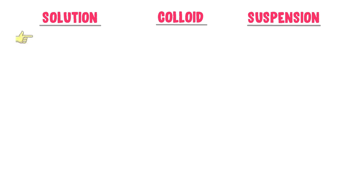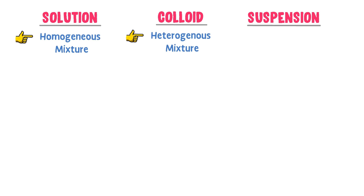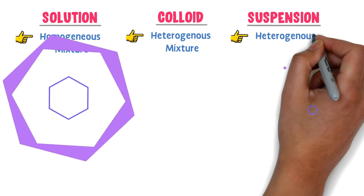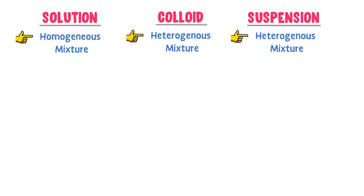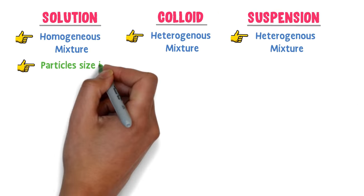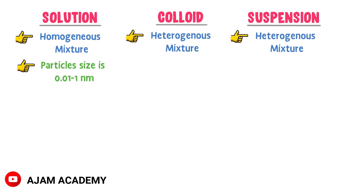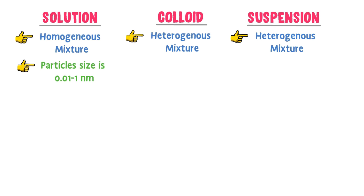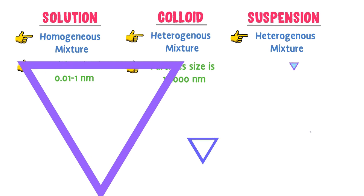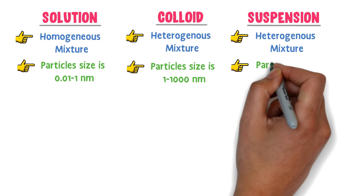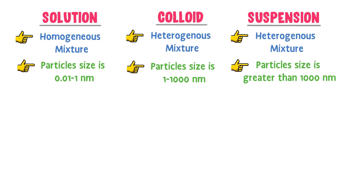A solution is a homogeneous mixture, while a colloid and suspension are heterogeneous mixtures. Regarding particle size: in a solution, particles range from 0.01 up to 1 nanometer; in a colloid, particles range from 1 up to 1000 nanometers; and in a suspension, particle size is larger than 1000 nanometers.